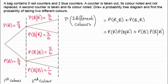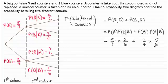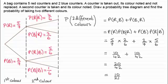Putting in the probabilities from the tree diagram: five sevenths times two sixths, plus two sevenths times five sixths, and we add those two results together. Working that out, you get ten forty-seconds plus another ten forty-seconds, giving twenty forty-seconds, which reduces to ten twenty-firsts if you divide the top and bottom by two.